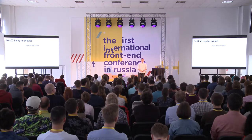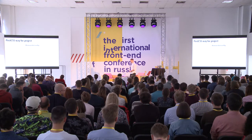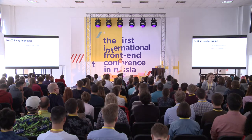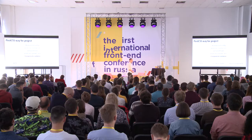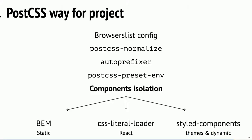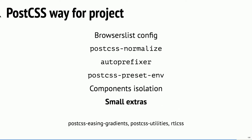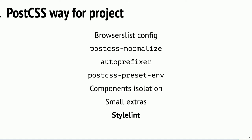Summary: to have a perfect PostCSS project, you must use Browserslist config, use PostCSS Normalize to decrease CSS size, use Autoprefixer, PostCSS Preset Env, some component isolation, and small extras like RTL CSS, PostCSS utility, and this amazing easing gradients project. And of course, in the end, use Stylelint to prevent errors. And — not a word about preprocessor: if you want it use it, if you don't want it don't use it. Use whatever preprocessor you want — Sass, Less, PostCSS, I don't care.